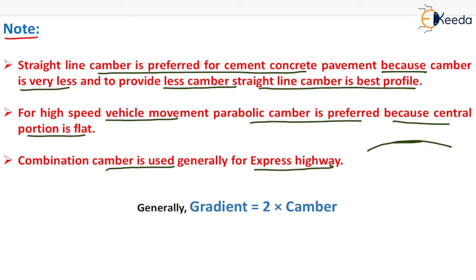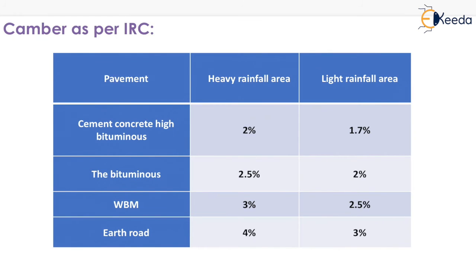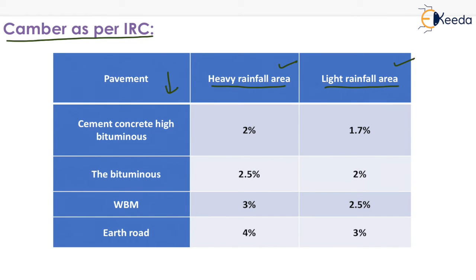If we want to determine the gradient, it will be equal to 2 times the camber. Now we have camber values as per the Indian Road Congress for heavy rainfall areas and for light rainfall areas. In the first column the pavement type is written, and the columns show heavy rainfall area and light rainfall area.